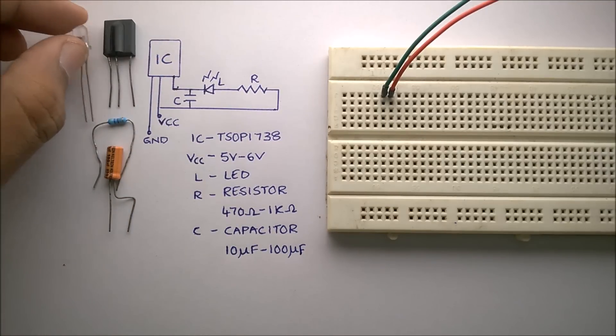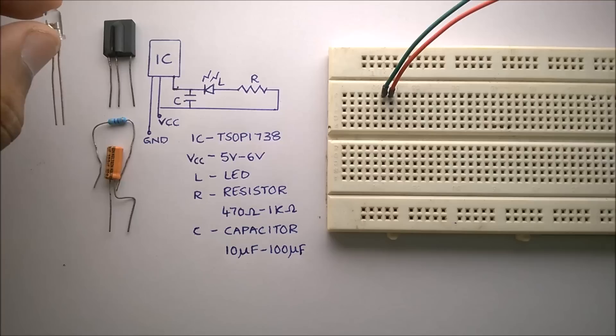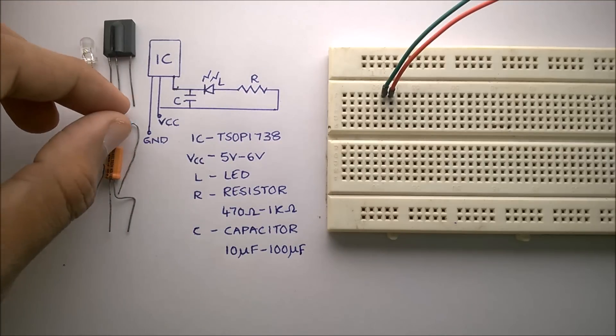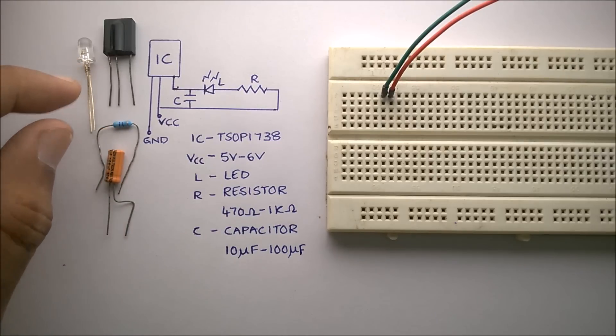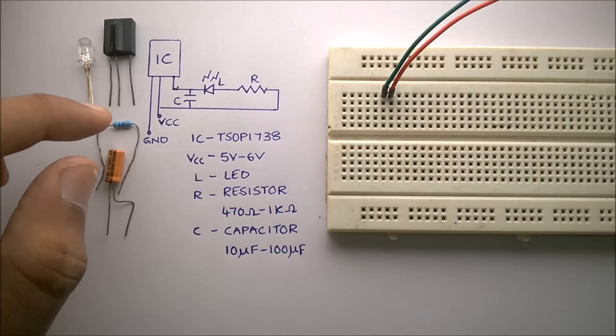An LED which works well at 3 volts, and a resistor. This resistor is to prevent the LED from burning out. You can use any resistor between 470 ohms to 1 kilohm.